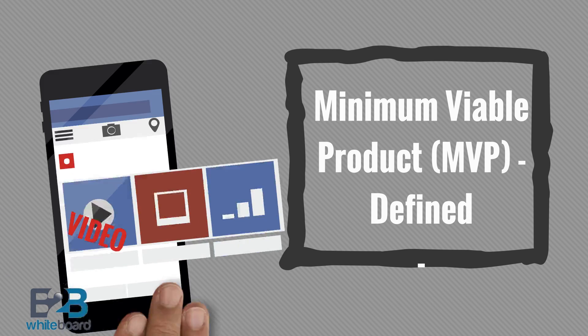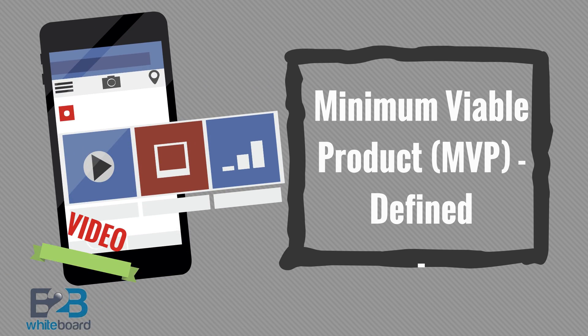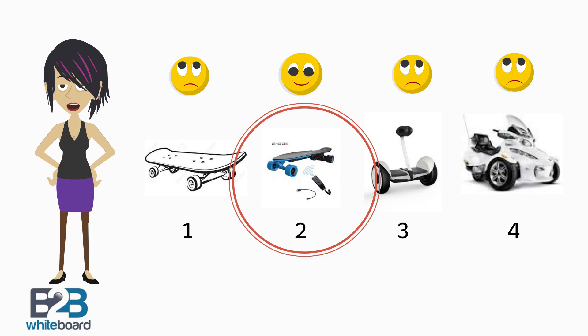Let me define what a minimum viable product is. A minimum viable product, MVP, is a product with just enough features to satisfy early adopters and provide feedback for future product development.